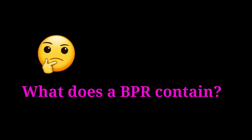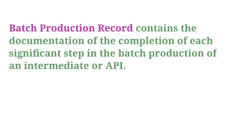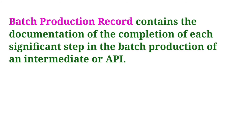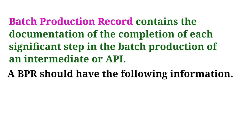What does the BPR contain? A batch production record contains the documentation of the completion of each significant step in the batch production of an intermediate or API. A BPR should have the following information.